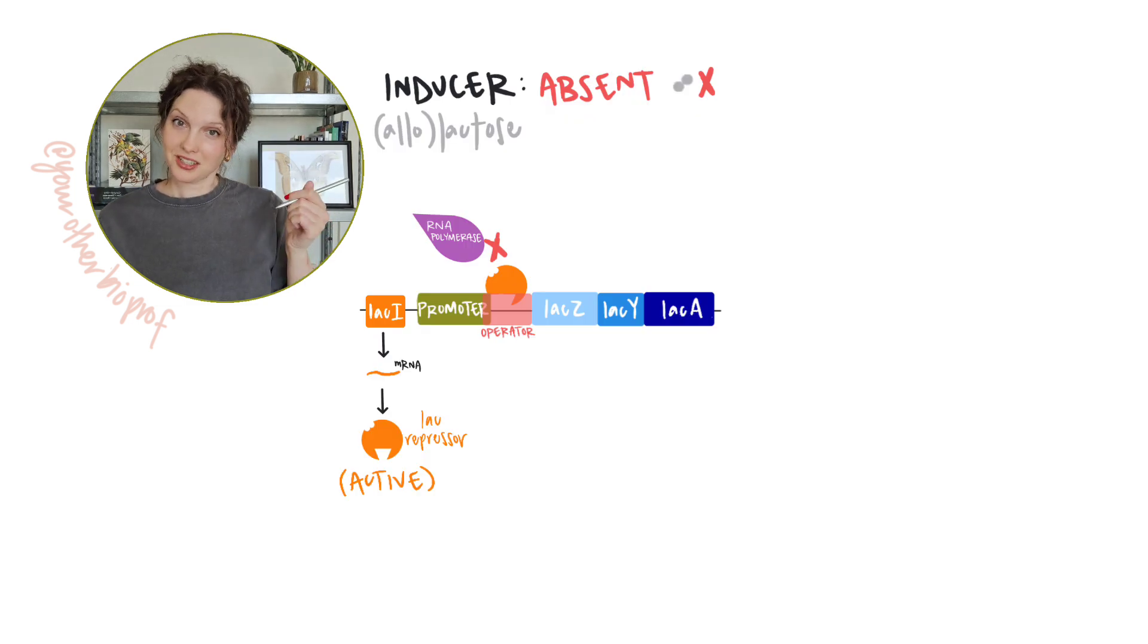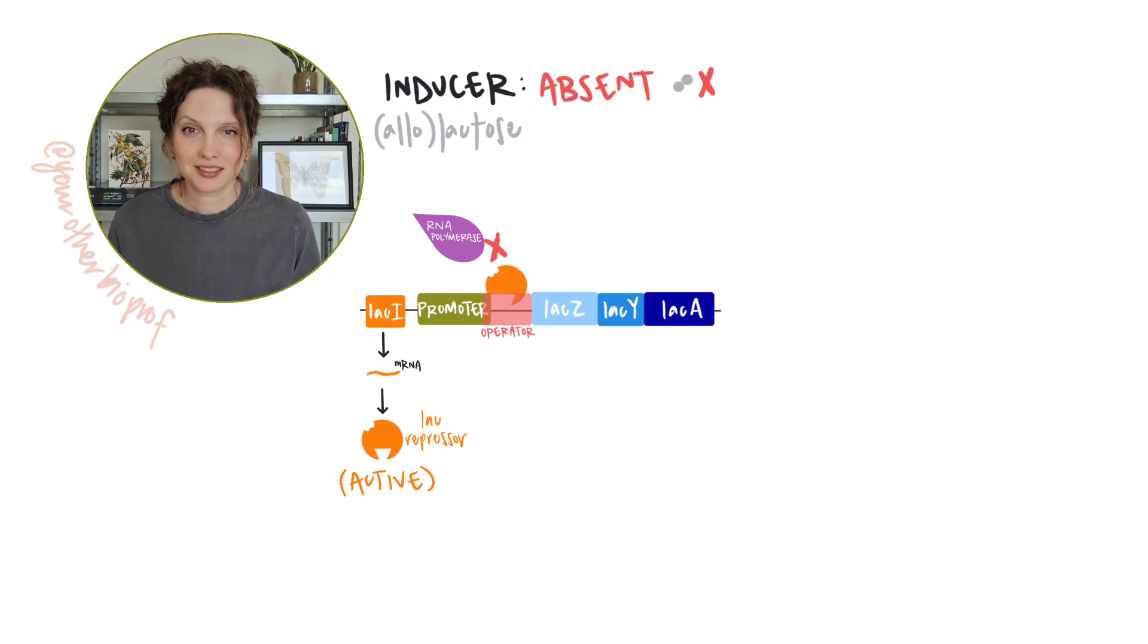Alright, so here's the lac operon. It should look familiar. Remember that in the absence of lactose, a repressor protein is active, binds to the operator and blocks transcription of the lactose metabolizing structural gene products. We might call expression here off or leaky.